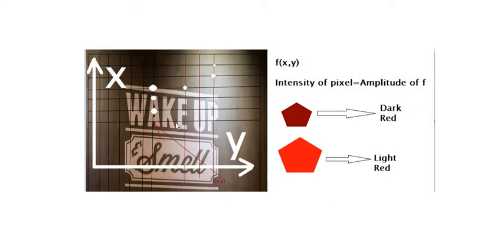All these intersecting points are called pixels. The intensity of an image is actually the value of function f(x, y). The amplitude of function f at any pair (x, y) is called the intensity of an image at that point. What I mean by that and why it is important to understand is because it decides the brightness.